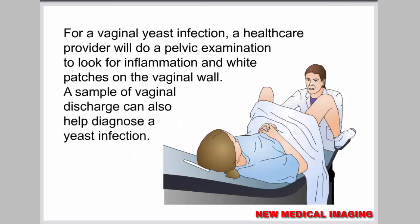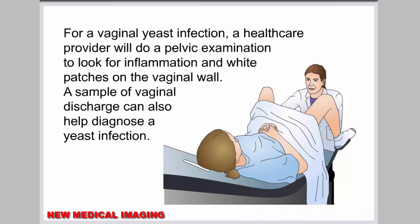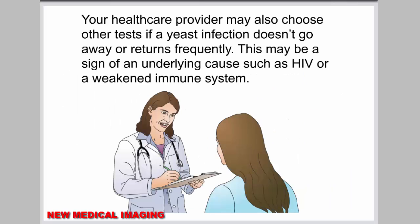For a vaginal yeast infection, a health care provider will do a pelvic examination to look for inflammation and white patches on the vaginal wall. A sample of vaginal discharge can also help diagnose a yeast infection. Your health care provider may also choose other tests if a yeast infection doesn't go away or returns frequently, as this may be a sign of an underlying cause, such as HIV or a weakened immune system.